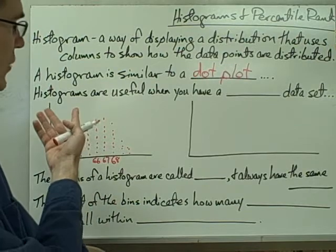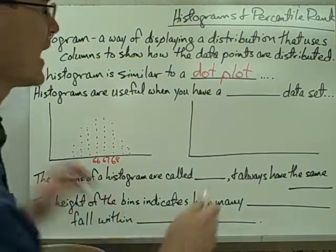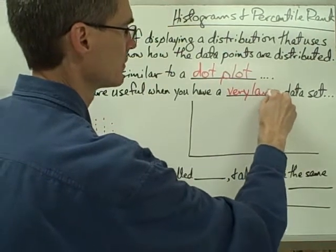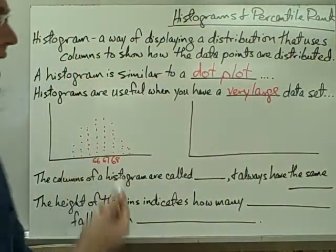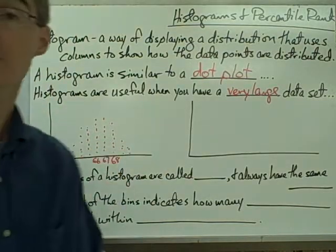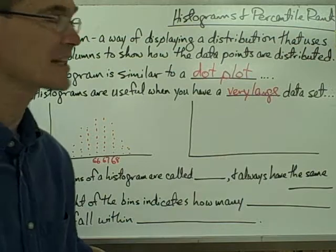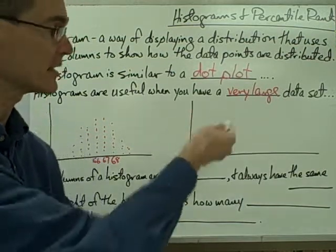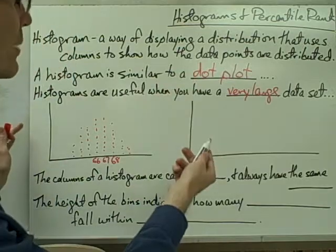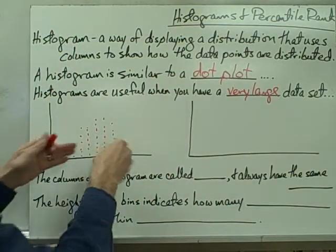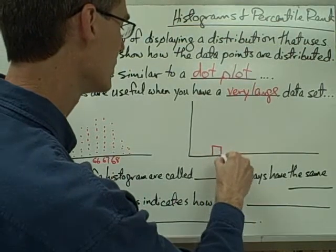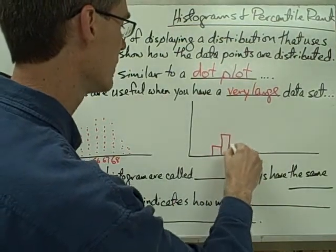Histograms are very useful if you have a very large data set. This dot plot of people's heights might be okay if we just had maybe 30 or 40 people. But let's say we had several thousand people whose heights we measured and we wanted a graph of what their heights look like — then we might want to use a histogram. A histogram of this same data set, with a whole bunch more people, might look something like this.